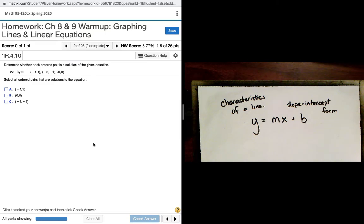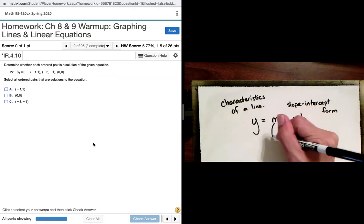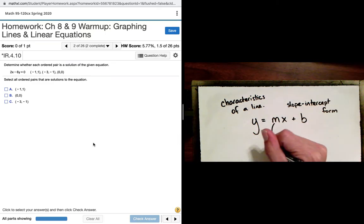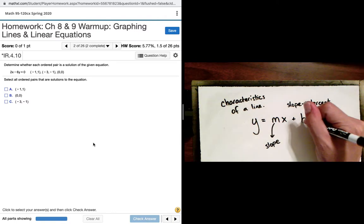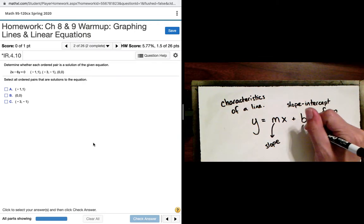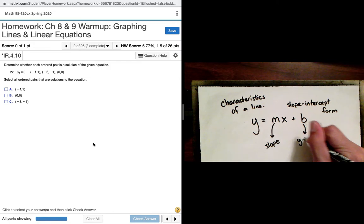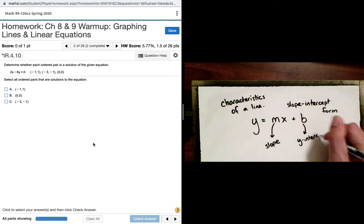Slope intercept form is called that because it gives us two important characteristics of a line. The only two, really, that we need in order to graph it. We've talked a great deal already about m. We know m is the slope or the rise over the run. But now we have this new guy over here, b. So b plays the role of the y-intercept, or where the graph crosses the y-axis.